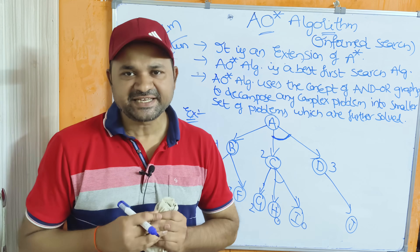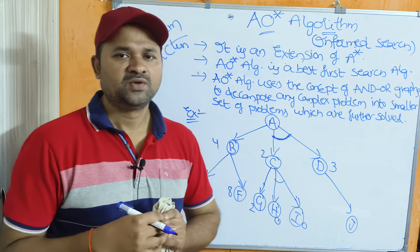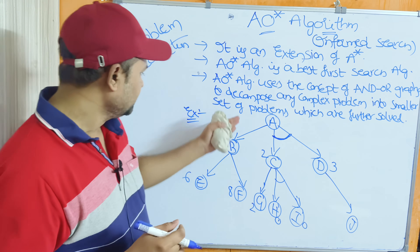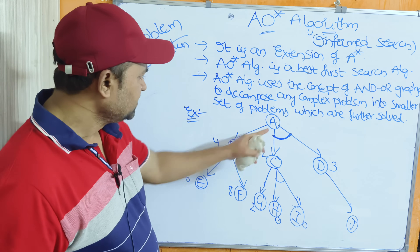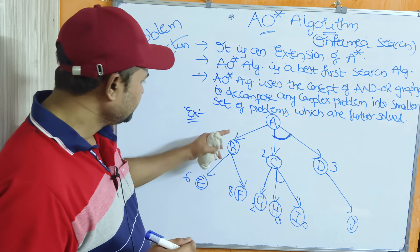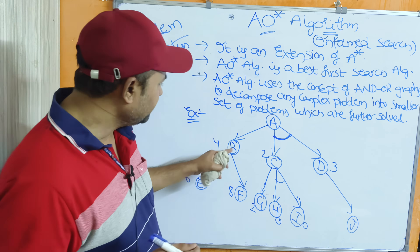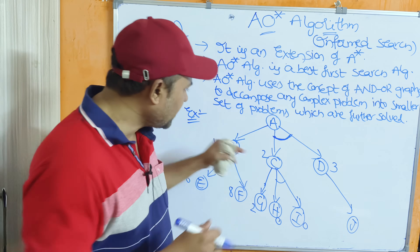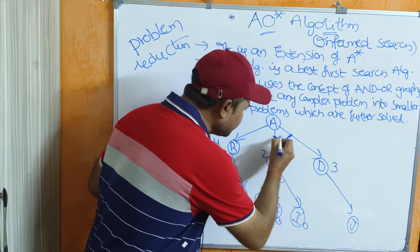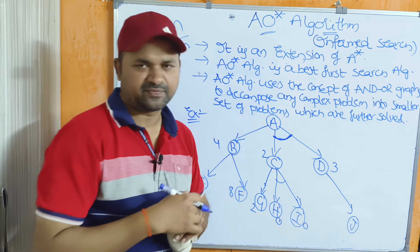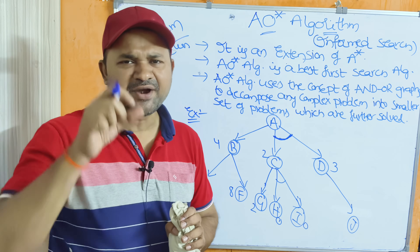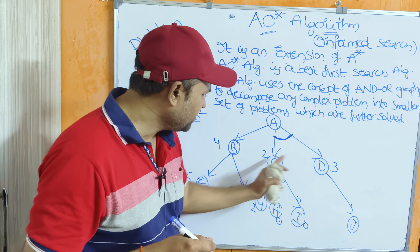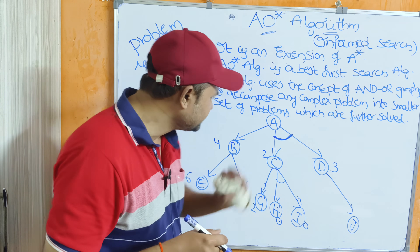Now let's see an example followed by the AO* algorithm. This is the given graph. A is the root node. A's children are B, C, and D. This is an OR graph, where the arc represents the AND graph — we are going to perform an AND operation on two nodes.